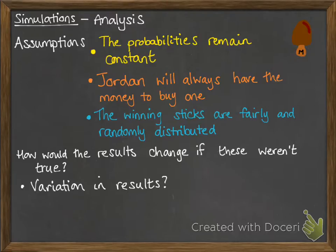Then you look at the variation in your results. You look down your table and see whether there were any days where he had to buy only a small number of magnums before getting a winning stick, or days where he had to buy a lot. You can talk about the variation in your results — these are his estimated chances, but sometimes it would be more, sometimes less. You might give a range of values that he'd fall in the middle of.